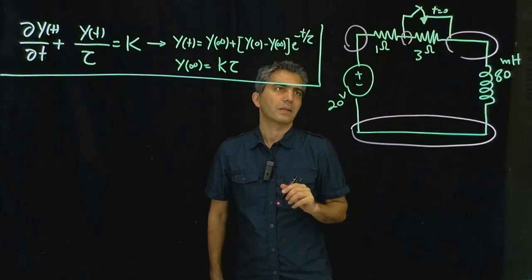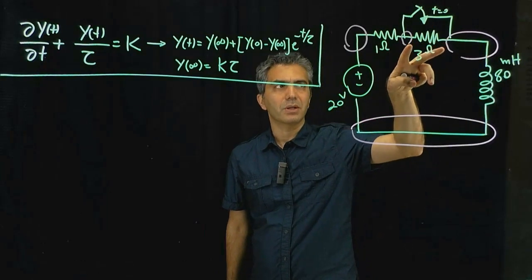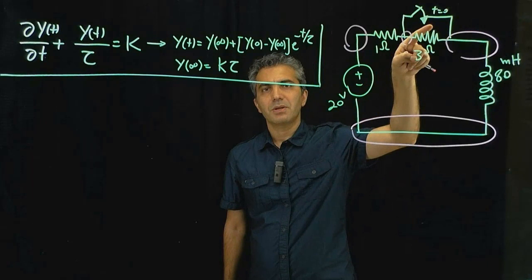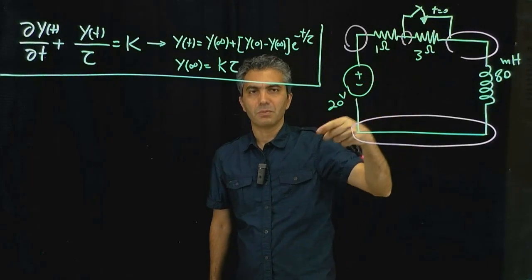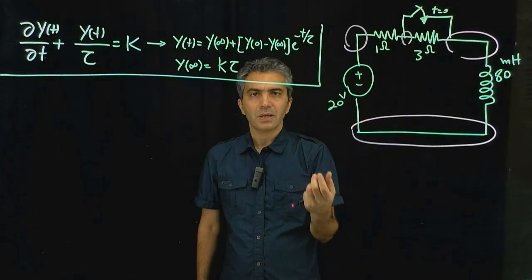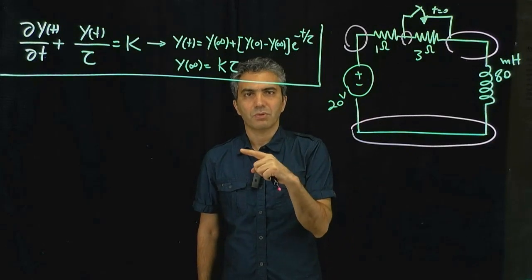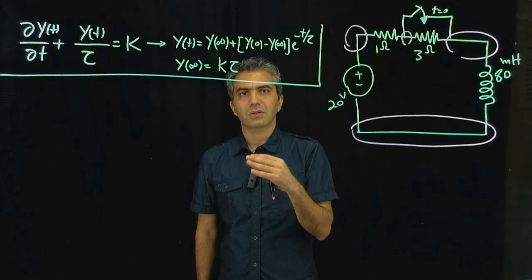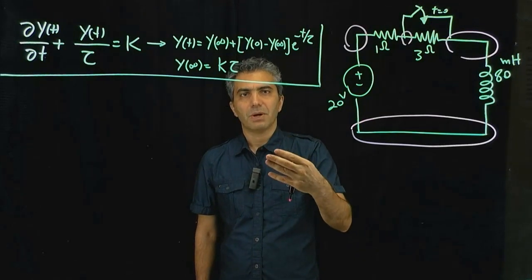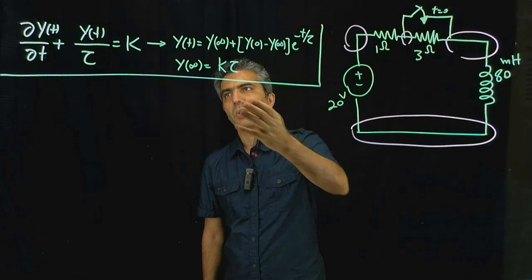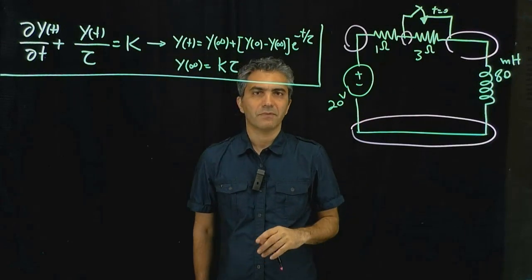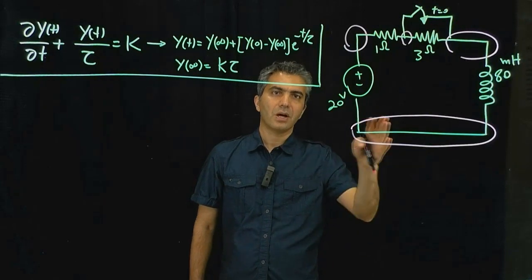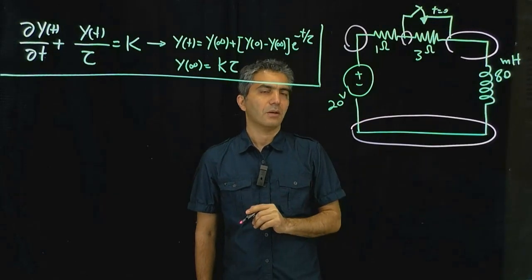You should notice that the switch is across this component in the circuit. Every time that you have a switch, we have to analyze two different circuits — one circuit before the switch and another circuit after the switch. Usually the circuit before the switch gives you the information about the initial condition required for solving the differential equation once the switching is done.